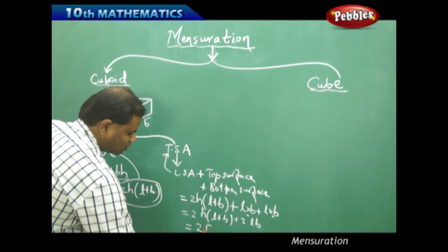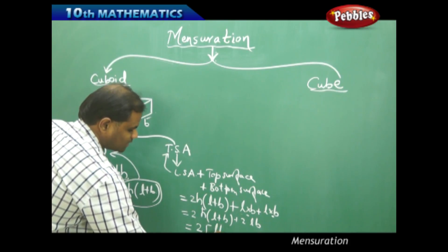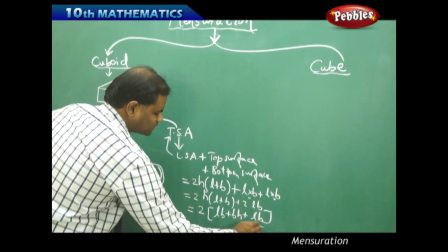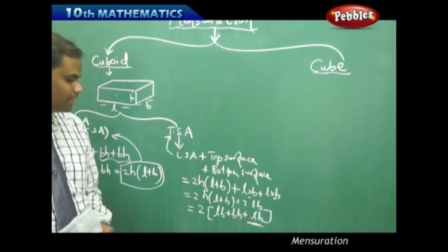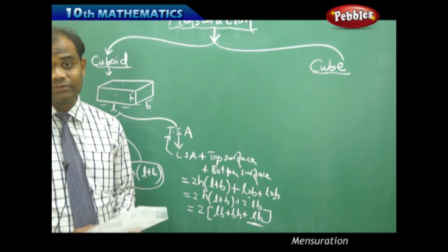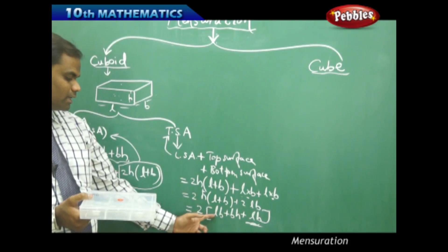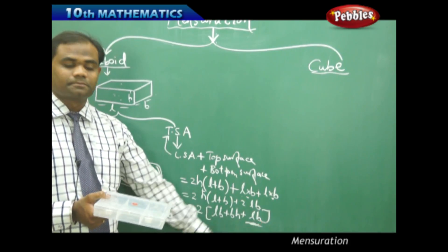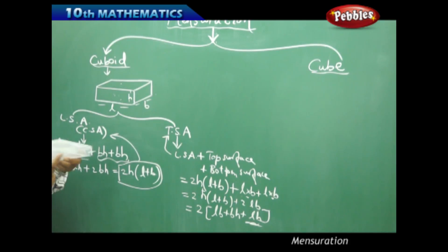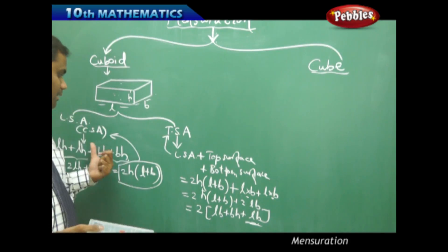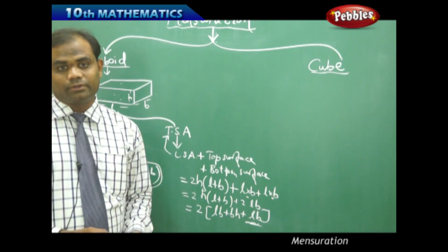When I simplify further and take 2 as common, I get 2(LB + BH + LH). So the total surface area of a cuboid is 2(LB + BH + LH), and the lateral surface area of a cuboid is 2H(L + B).